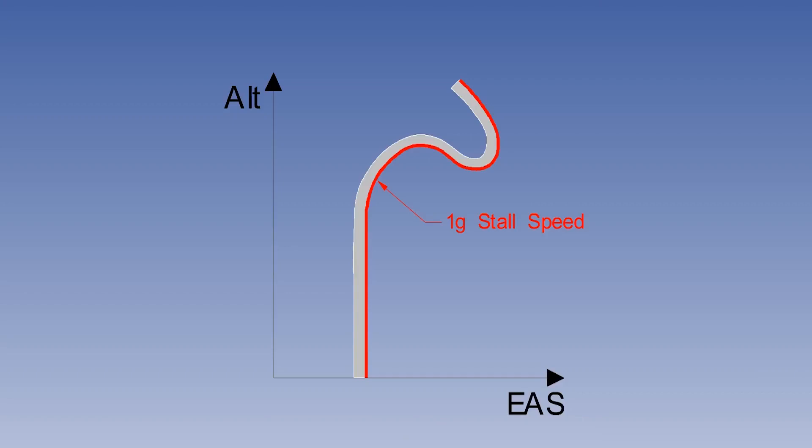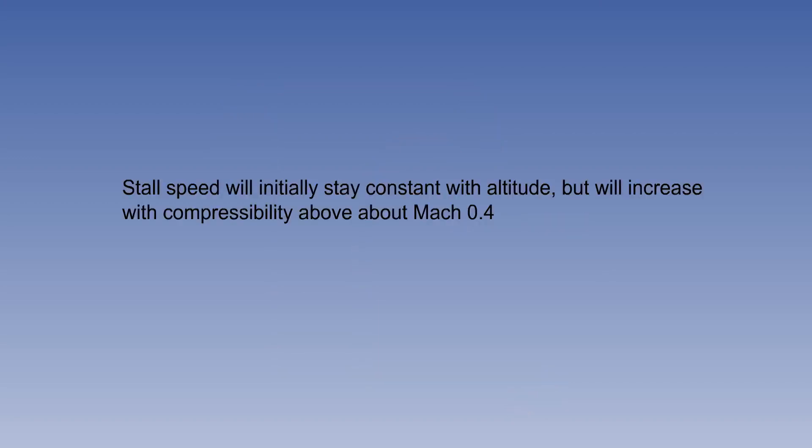The graph now on the screen shows the variation of stalling speed with altitude at a constant load factor. This type of curve is called the stalling boundary for the given load factor, in which altitude is plotted against EAS. At the load factor shown, 1G, the aircraft cannot fly to the left of this boundary. You can see that at lower altitudes, stall speed does not vary. This is because the Mach number at the stall is less than 0.4, too low for compressibility to have any effect. By about 30,000 feet, the Mach number has risen to the extent the compressibility is significant, and the rise in stalling speed is apparent. The conclusion here, then, is that stall speed will initially stay constant with altitude, but will increase with compressibility above about Mach 0.4.